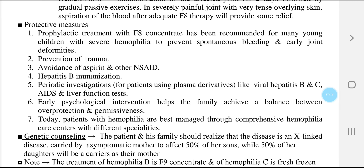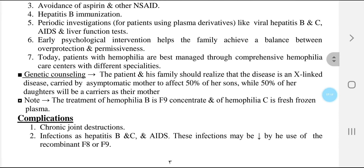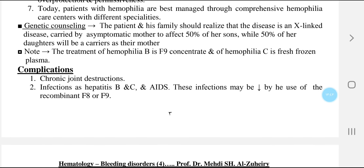Today, patients with hemophilia are best managed through comprehensive hemophilia care centers with different specialties. Genetic counseling: the patient and his family should realize that the disease is X-linked, carried by an asymptomatic mother to affect 50% of her sons, while 50% of her daughters will be carriers like their mother. The treatment of hemophilia B is factor 9 concentrate, and of hemophilia C is fresh frozen plasma.